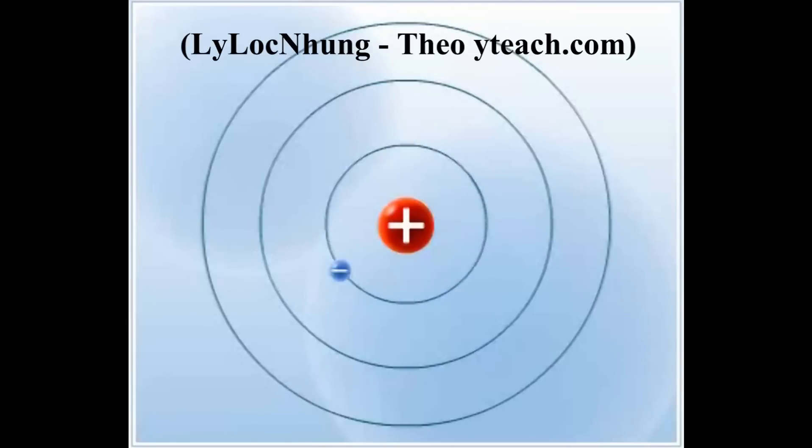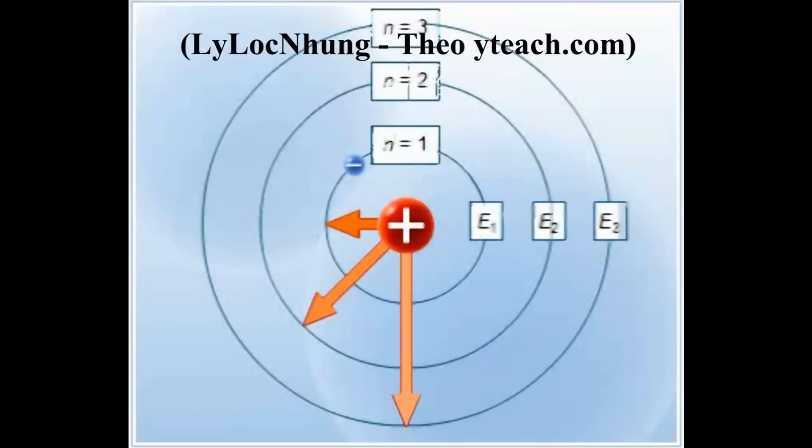Bohr postulated that electrons can travel around the nucleus only in fixed circular orbits. The radius and energy of each orbit are quantized, meaning that each orbit can assume only one specific value of radius and one value for its energy, determined by a quantum number N.